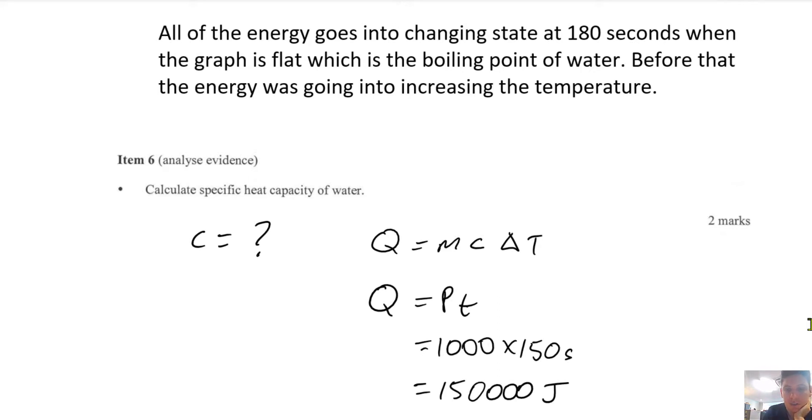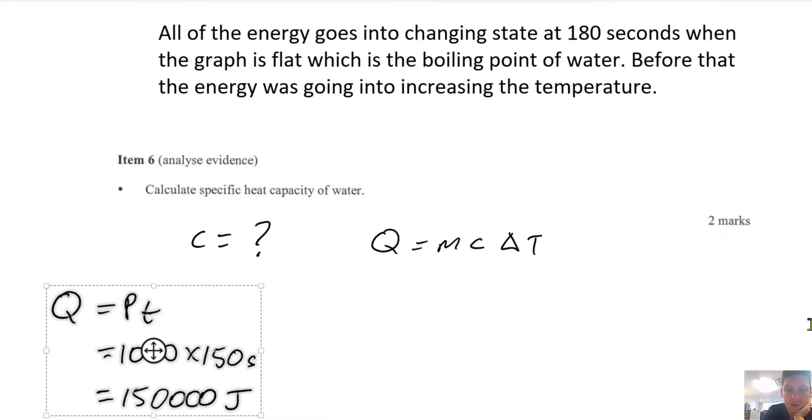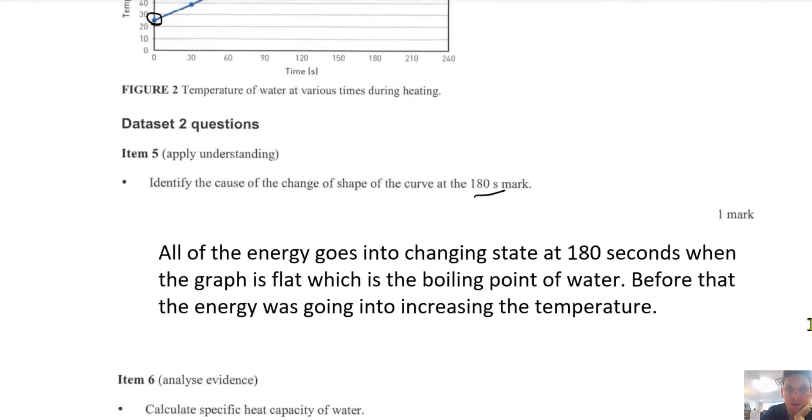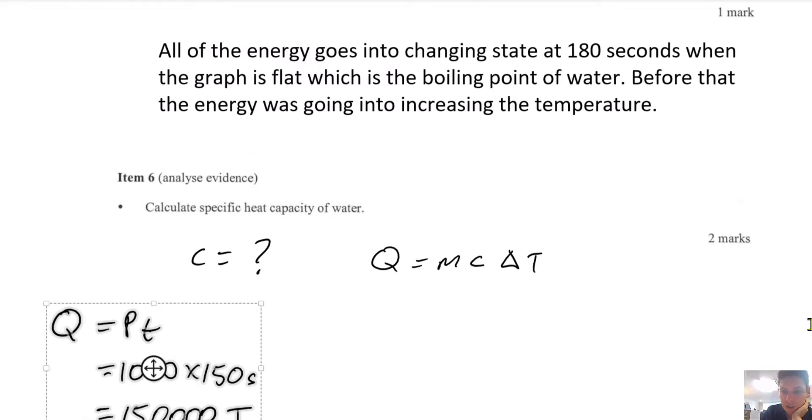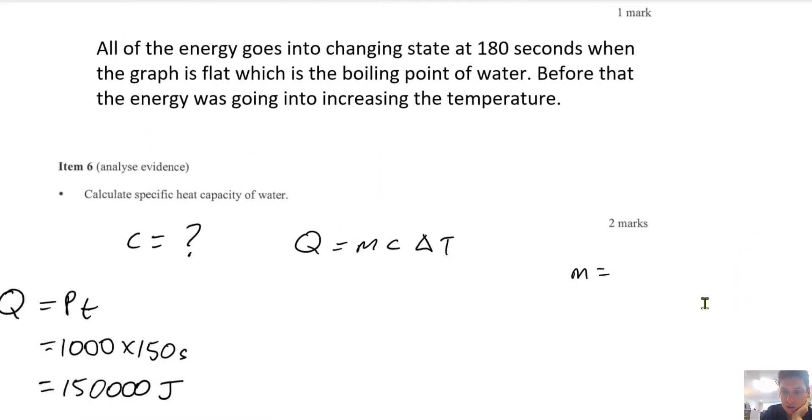Next, we need to write down the mass. So let's have a look. Where's the mass? We have this, which is 500 mils. Hopefully you know one mil is equal to one kilogram. So this is 500, sorry, one gram. And we want it in kilograms. So that's our mass.